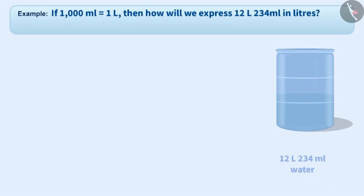There is a tank here which contains 12 liters and 234 milliliters of water. If 1000 milliliters equals 1 liter, then how will we express 12 liters and 234 milliliters in liters?